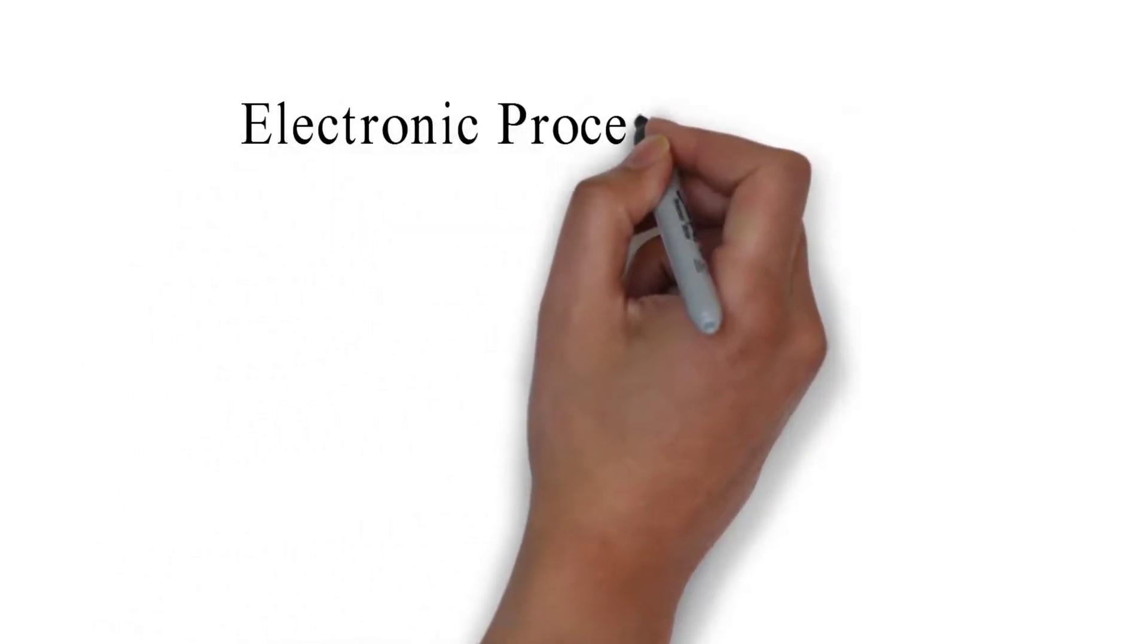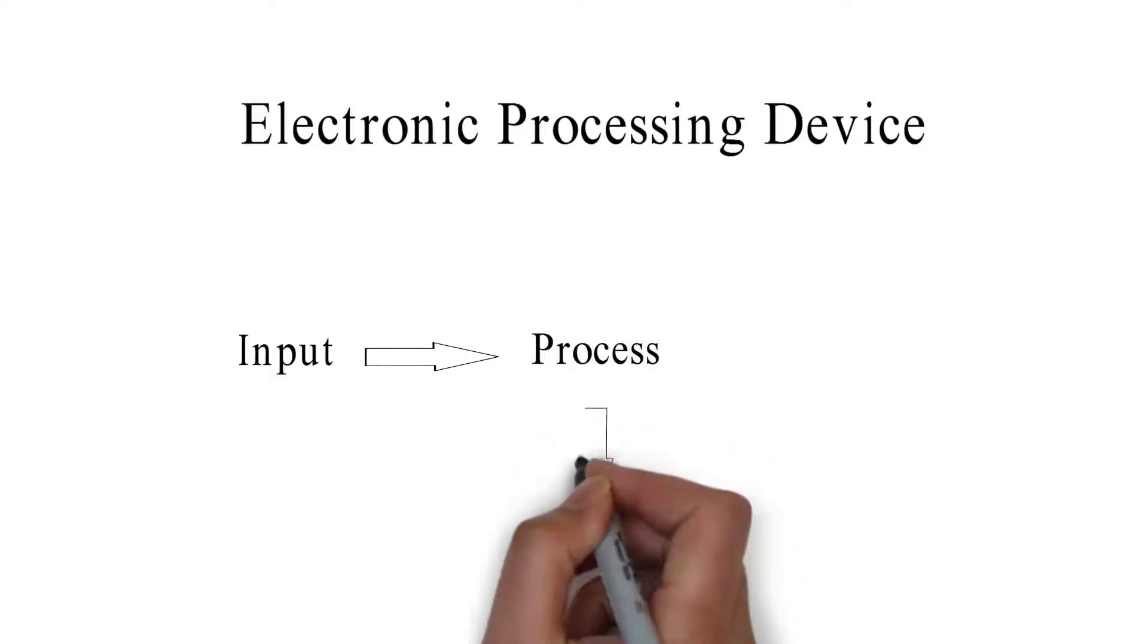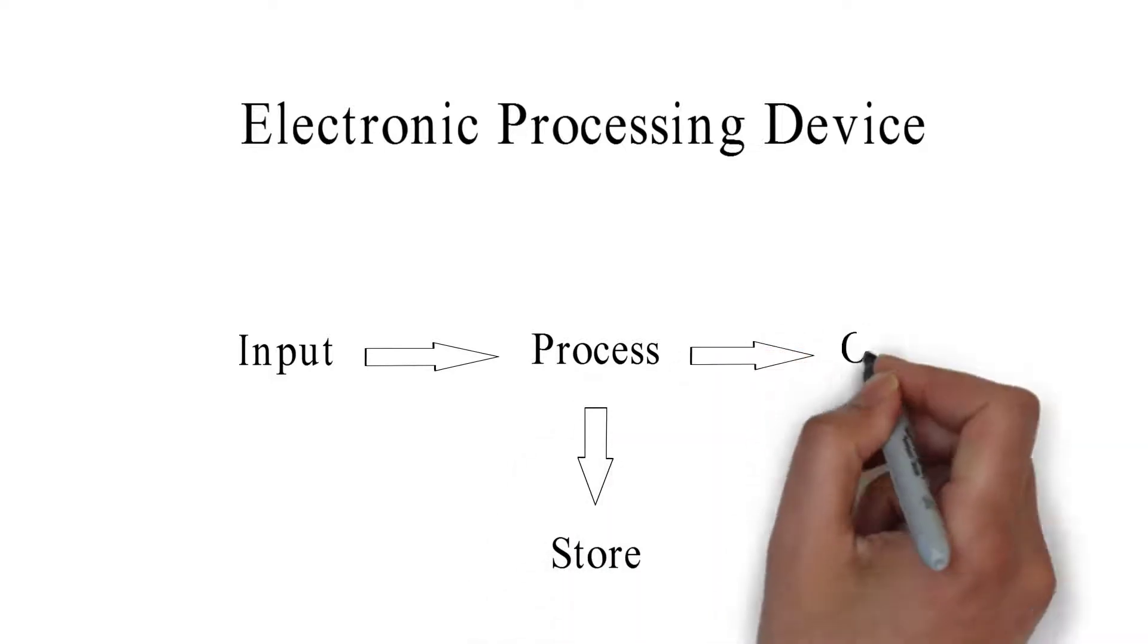Computer is an electronic processing device that takes data as an input, processes the data into meaningful information, stores it in the memory, and gives the output.